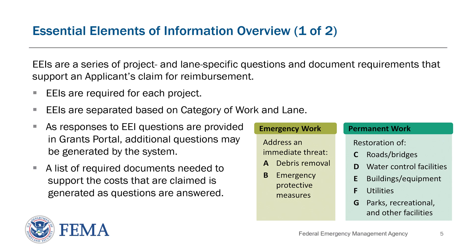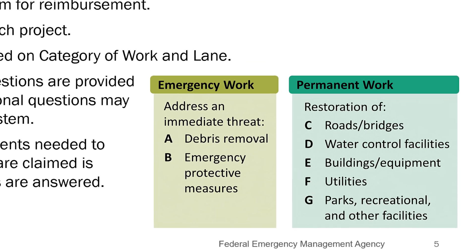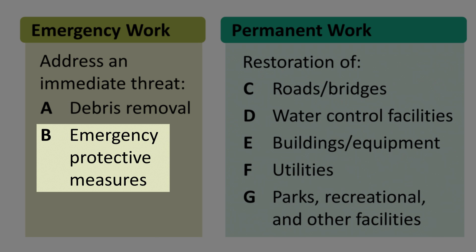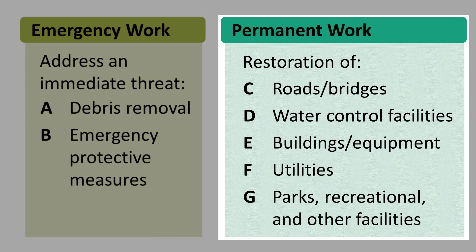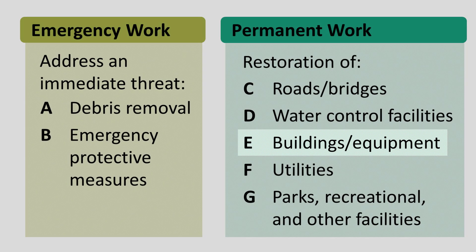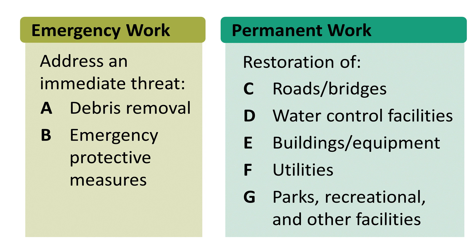EEIs are a series of project and lane specific questions and documentation requirements that support claimed damage, work, and costs. They are needed to process the claim for reimbursement. EEIs are required for each project and are separated by category of work and lane. Documentation is specific to the category of work and the amount and complexity of the work completed. Categories A and B refer to emergency work that includes either debris removal as category A or emergency protective measures as category B. Categories C through G refer to different kinds of permanent work, such as roads and bridges as category C, or buildings and equipment as category E.